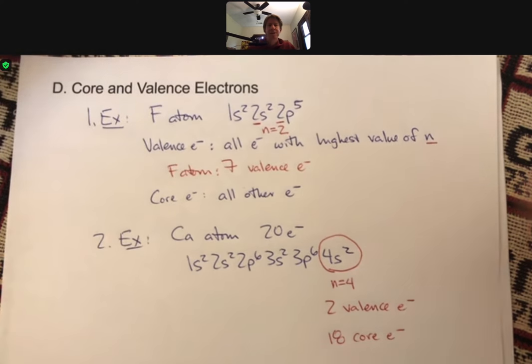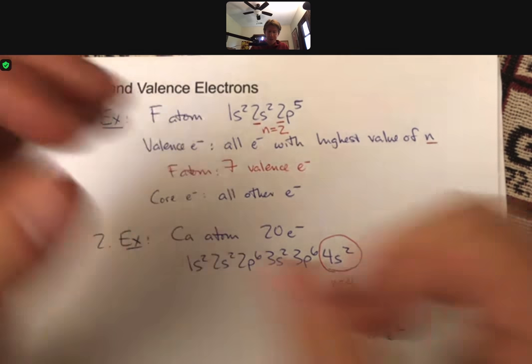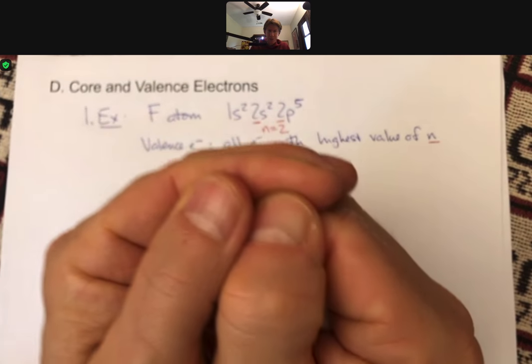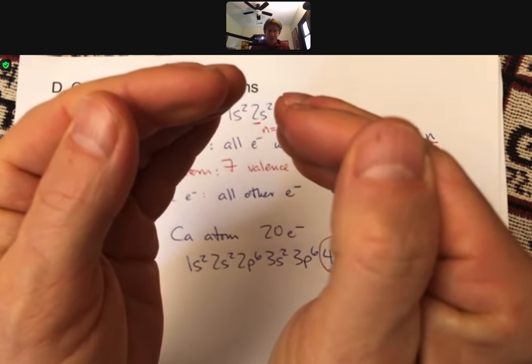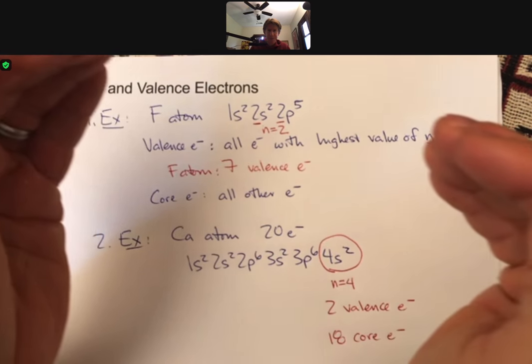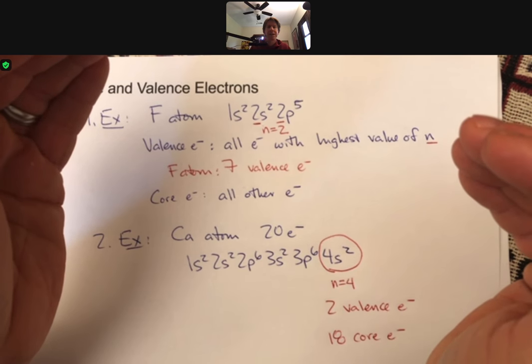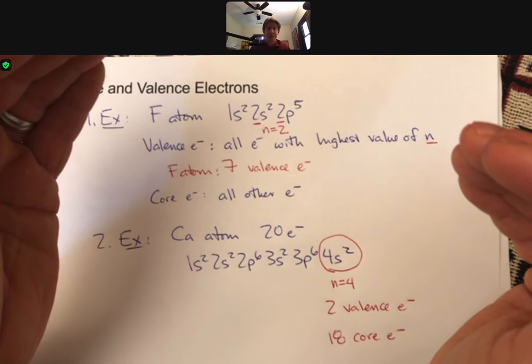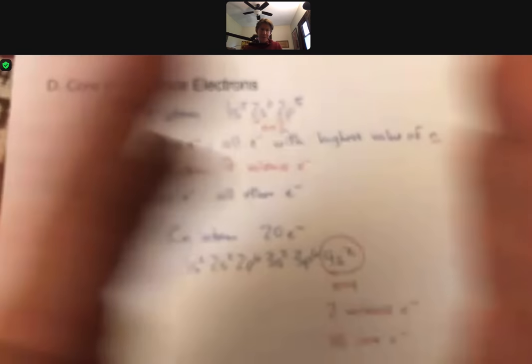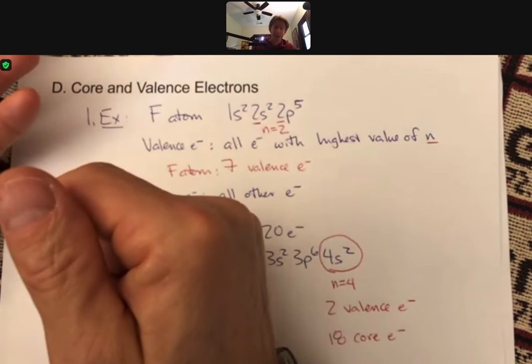And we really care about valence electrons because valence electrons are going to be the ones that participate in bonding. They're also the farthest out. Remember, so we have n equals 1, n equals 2, n equals 3, n equals 4. The n equals 4 electrons are farthest from the nucleus. That's why they're going to be the easiest to have react, because they're farthest from the nucleus. They're most easily lost, and they're most easy to bump into other things because they're on the outside of the atom.